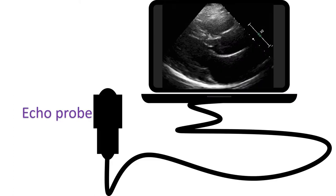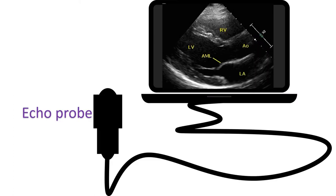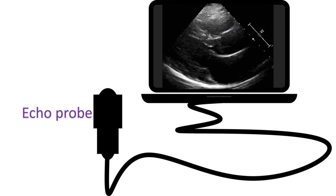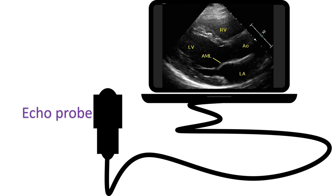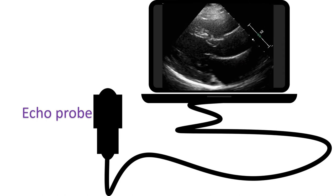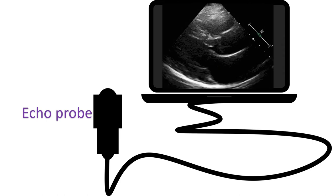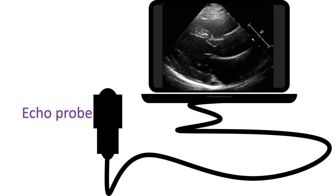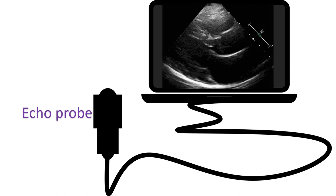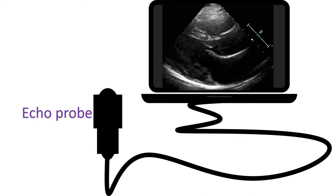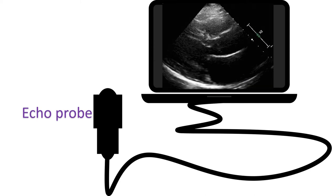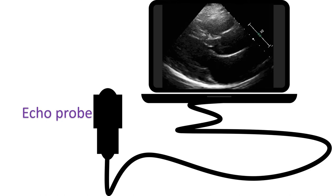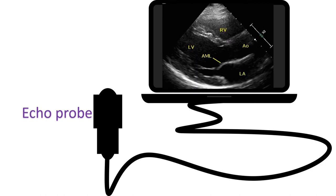Unlike in M-mode, it is easier to identify the various structures of the heart in a real-time 2D echo, so that even an untrained person can get some idea when shown the images. This is especially true in complex birth defects of the heart, in which sizes and positions of the chambers and walls of the heart may vary much from what is normally expected.